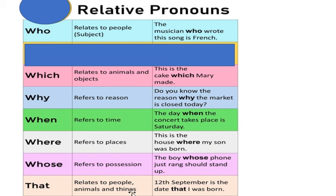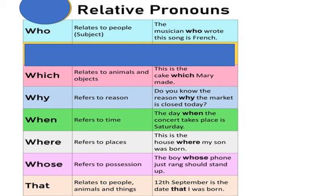'That' — refers to people, animals, or things. So 'that' can be used for people, animals, and objects. This can be confusing — which do I use? It's your choice. If talking about animals, you can use 'which' or 'that.' If talking about people, you can use 'that' or 'who.' If talking about things or objects, you can use 'which' or 'that' — no problem. Example: '12 de setembro is the date that I was born.' I'm referring to a situation and didn't want to use 'when,' but I could also use 'when' there — 'that' works just as well.